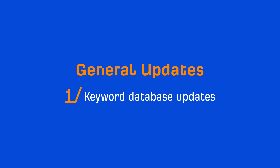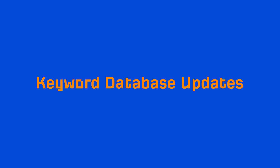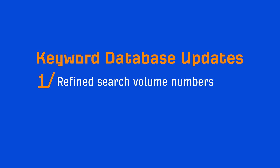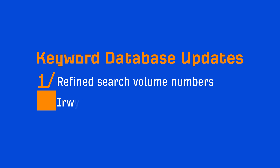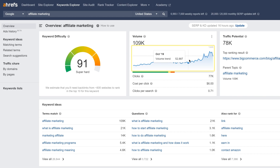Moving on, we have two general updates. First up, Keyword Database Updates. Last year, we invested a lot of time and resources on improving our keyword data. We refined our search volume numbers by blending data from multiple sources and finding the right balance between them. We also improved our database update frequency and introduced monthly search volume values for each keyword, with an option to export them into CSV.